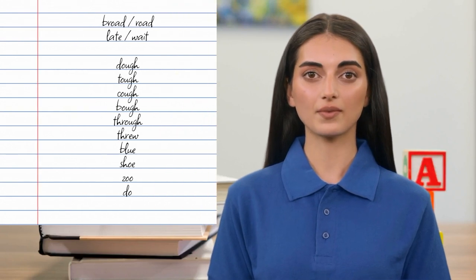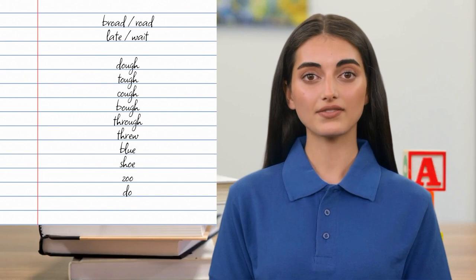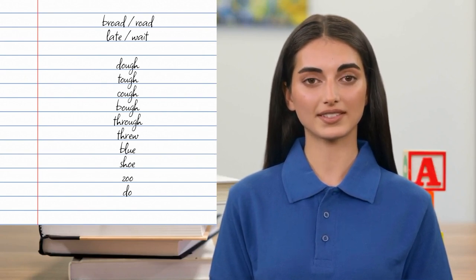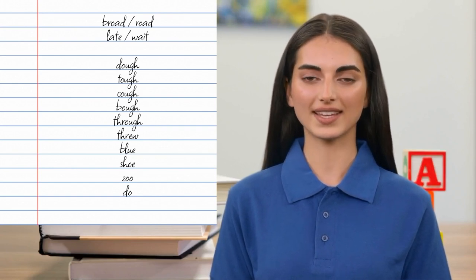Why doesn't broad rhyme with road, and why do late and wait rhyme for the ear, but not for the eye? Why does O-U-G-H have so many different pronunciations, and why can the vowel sound in through be spelled in so many different ways?